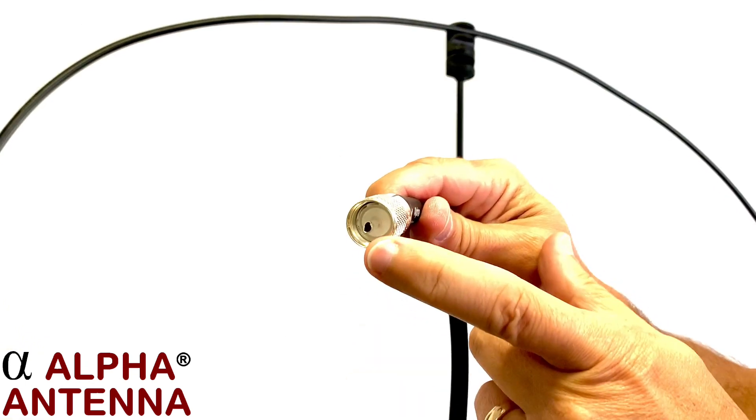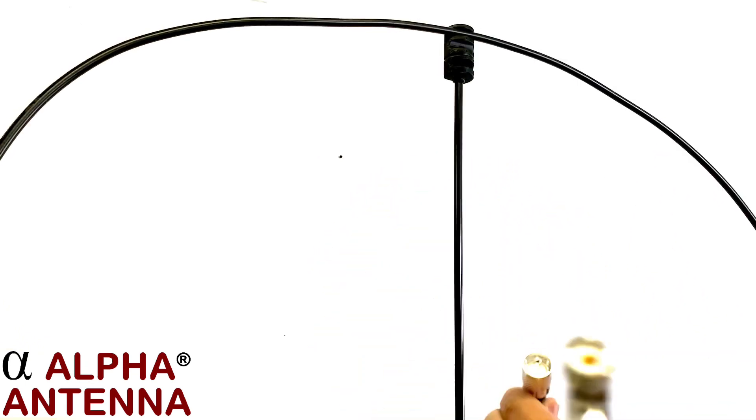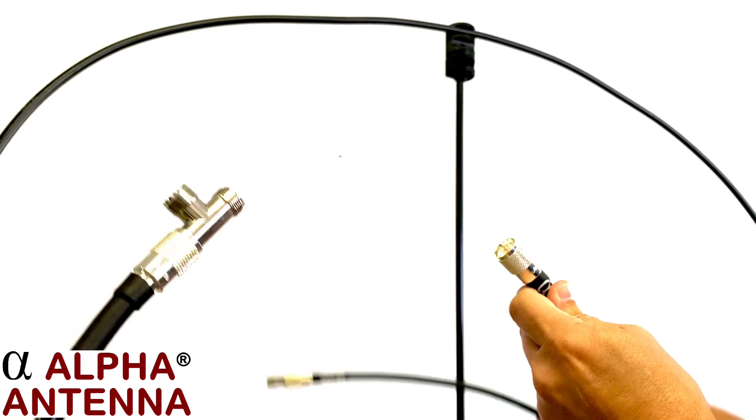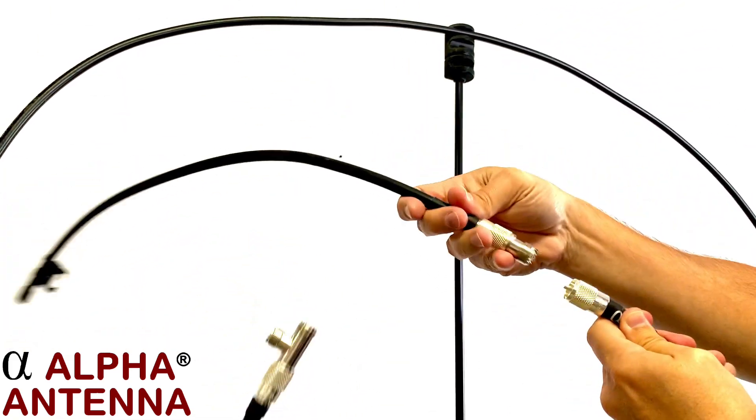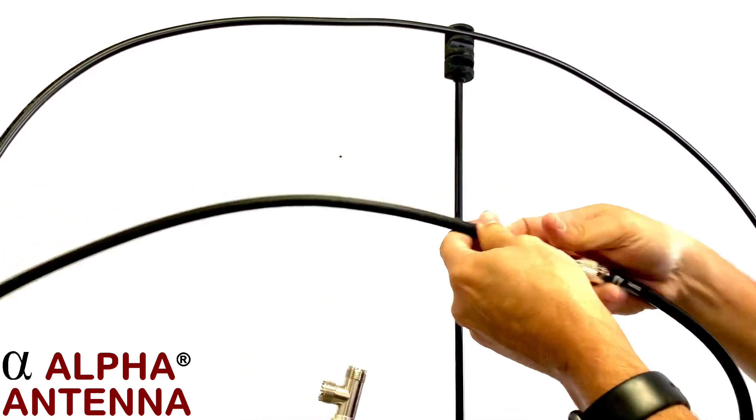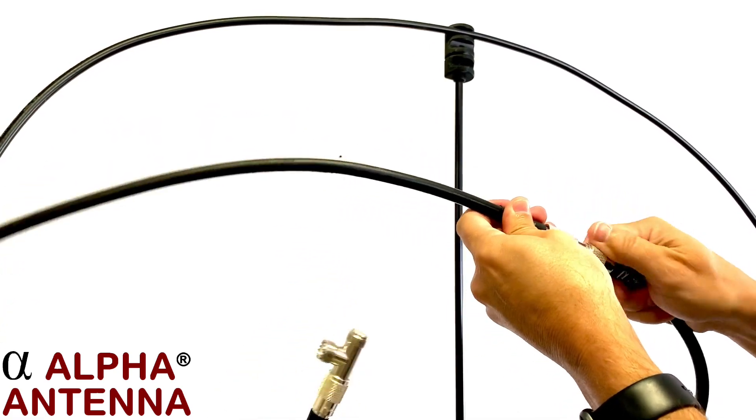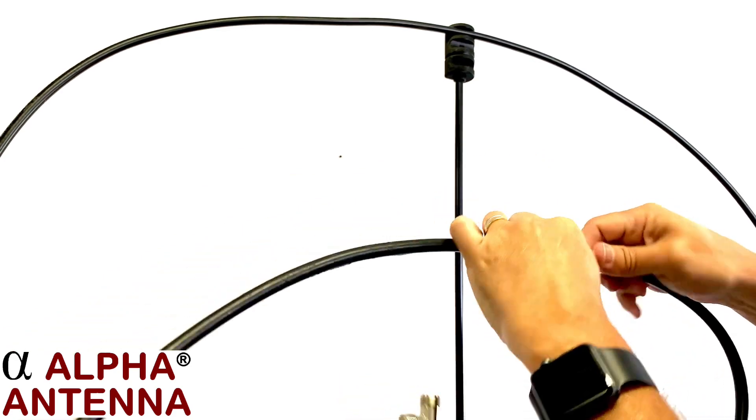On this end, which does not have the solder on the center conductor, insert the barrel connector onto that center conductor and then twist on the PL259 adapter.